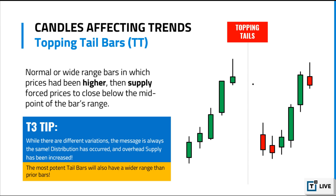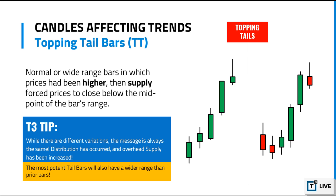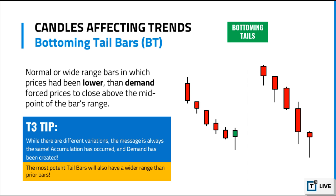The topping tail increases supply because the way it forms, the stock is moving up nicely and then gets slammed. People get caught — all the people that bought on the way up are now underwater, so they're going to be looking to sell the stock, especially if it starts to break down. The topping tail creates new supply where none existed before. That's why we say overhead supply has been increased — the bigger the tail, the bigger the supply.